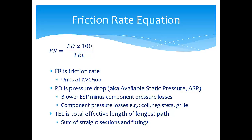The total effective length only applies to the longest path in the duct system. When we talk about effective lengths of fittings, for every duct contraction or turn — say a 90-degree turn — testing has been done to provide the length of straight duct that produces the same pressure drop. That's why we call it the effective length. Please keep in mind that the total effective length only applies to the longest path in the duct system.